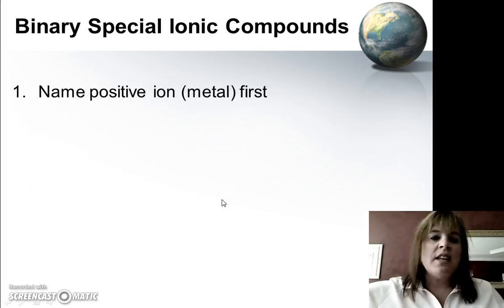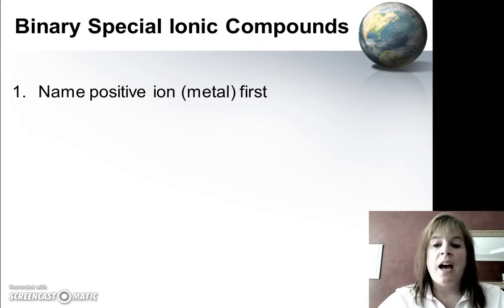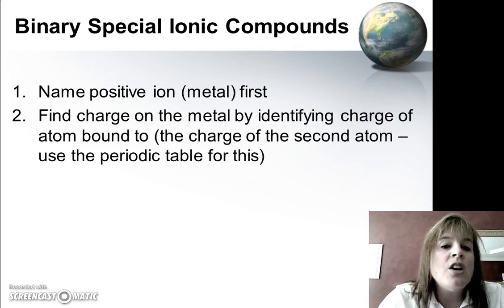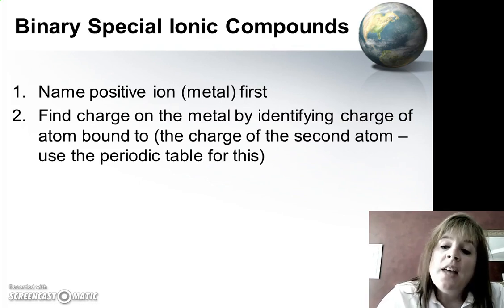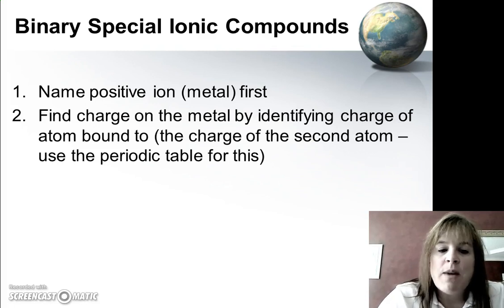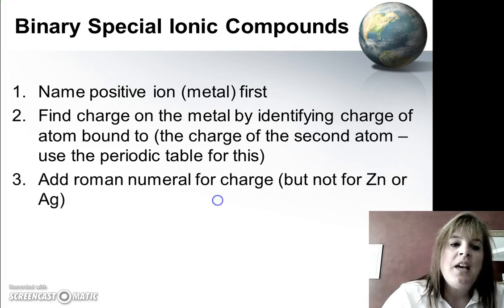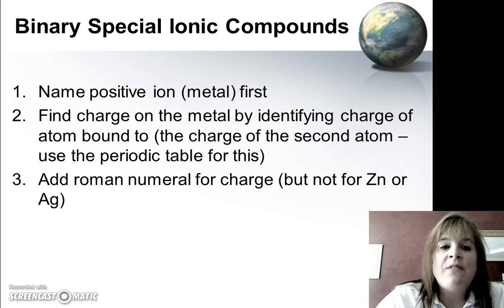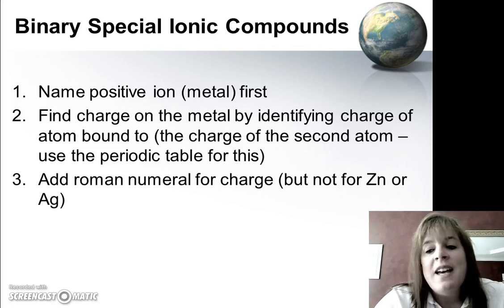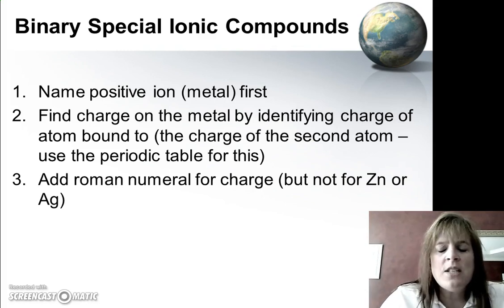So our rules are just like normal ionic nomenclature in that we name the first ion first, which will be our metal. But now we have to figure out the charge on that ion. The way you do that is you look at what it's bound to. What is that second element that it's bound to? Like we just looked at sulfur. So we went to the periodic table and found out that sulfur was minus 2, and we use that to give us clues as to what the charge of that first metal is. Once we figure that out, we add a Roman numeral after the name of the first metal. Now we don't do that for zinc or silver because they don't have an identity crisis. Silver is always plus 1, and zinc is always plus 2.